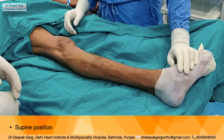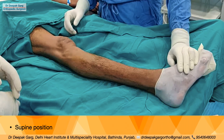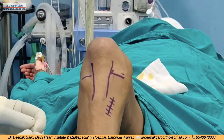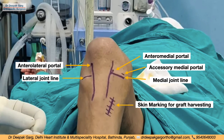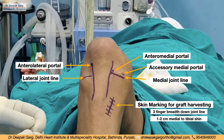For patient positioning during ACL reconstruction, we keep the patient in supine position. We use a support for the foot to keep the knee in 90 degrees of flexion and use a side support. We then mark the surgical landmarks: the patellar tendon, medial joint line, lateral joint line, anterolateral portal, anteromedial portal, accessory medial portal, and skin marking for graft harvesting. The graft harvest mark is approximately 3 finger-widths below the joint line and 1 to 2 cm medial to the tibial shin; sometimes we can feel the tendon and mark accordingly.